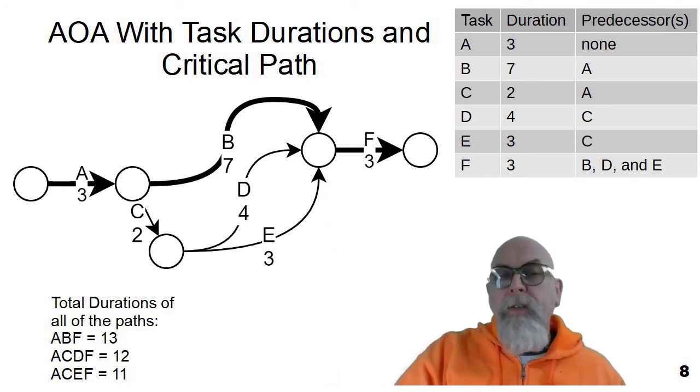The durations, if we add the durations up on the three various paths, we can see that the path ABF is 13 units long. The path ACDF are 12 units long. And the path ACEF is 11 units long. This tells us that the critical path, the path that if there's a lengthening of a task, the whole project will get lengthened, is called, is ABF for 13.